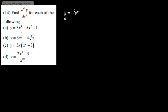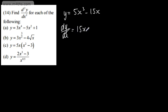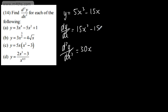For the next one, we expand it out. y = 5x³ - 15x. The first derivative, dy/dx, gives us 15x² - 15. The second derivative, d²y/dx², gives us 30x. And if we consider the third derivative, that would give us a constant of just 30.